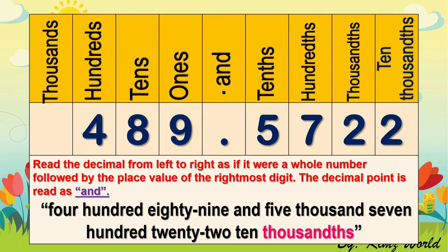Let us read it from left to right: 489, we read the point as 'and,' 489 and 5722, ten-thousandths.